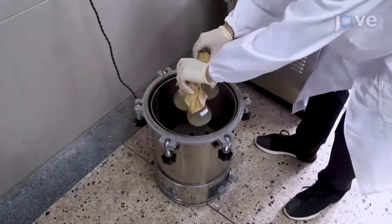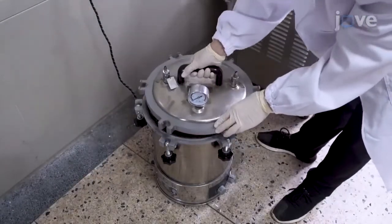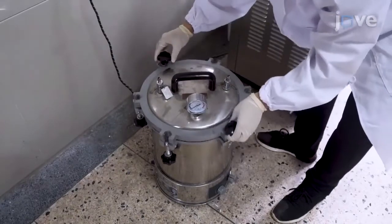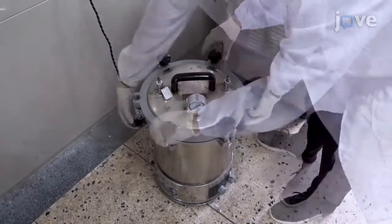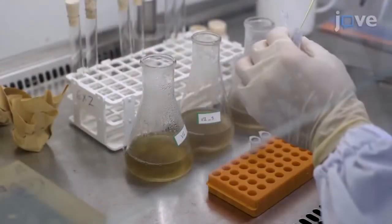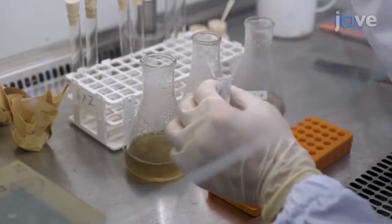Autoclave the two media with carbon source and the medium without carbon source as a control at 121 degrees Celsius for 15 minutes. Allow them to cool to room temperature and add haman and cysteine.